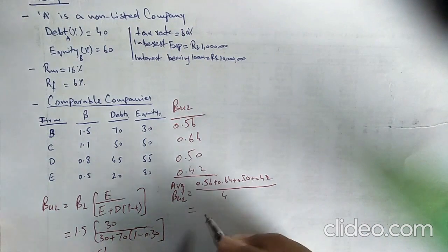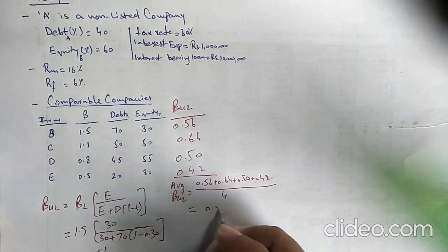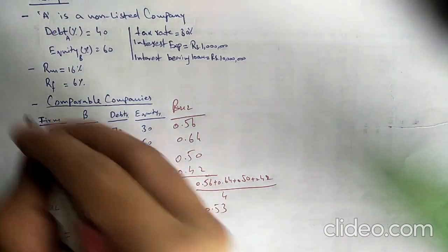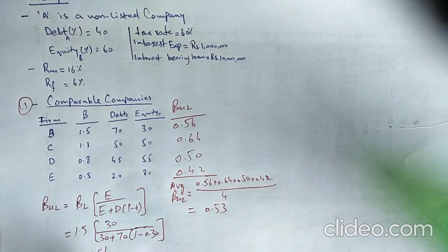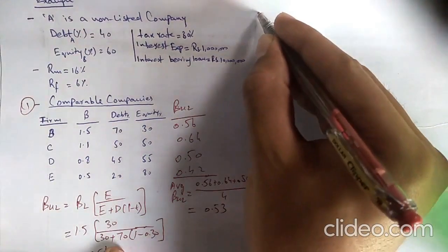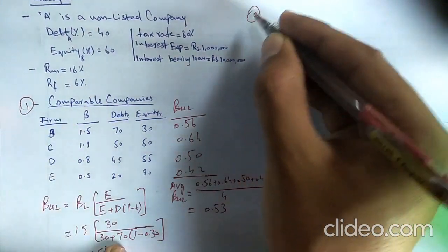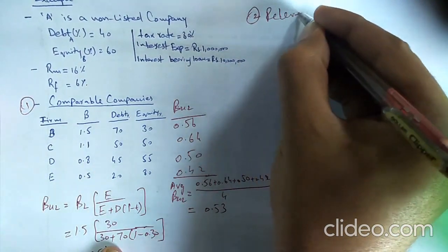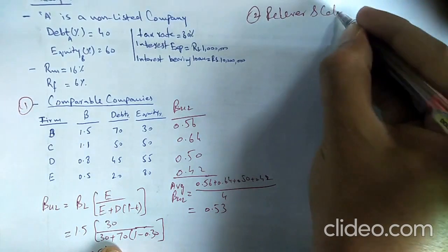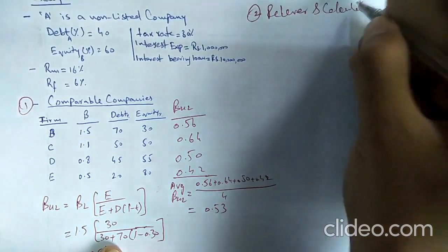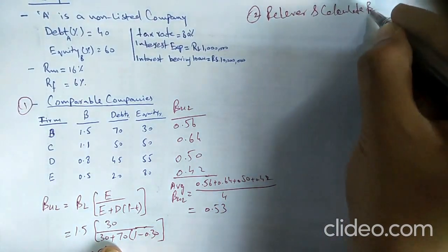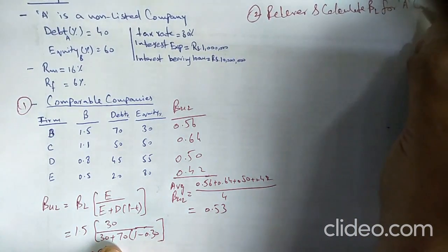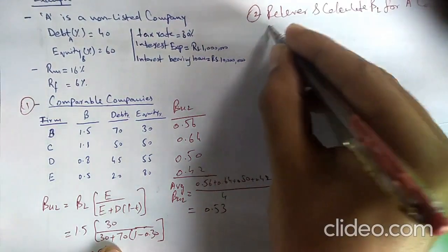The average unlevered beta is 0.53. So in the first step, I calculate the average unlevered beta of comparable companies. In the second step, I will re-lever the beta and calculate the levered beta for A company, which is a non-listed company.